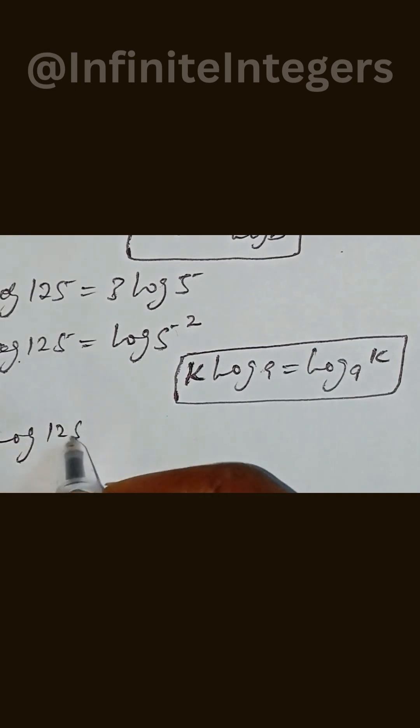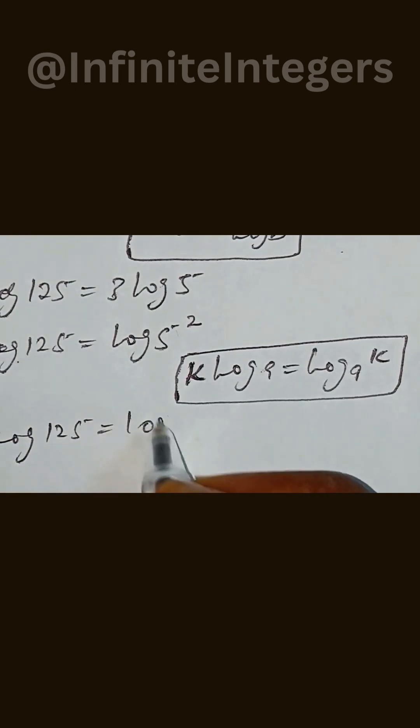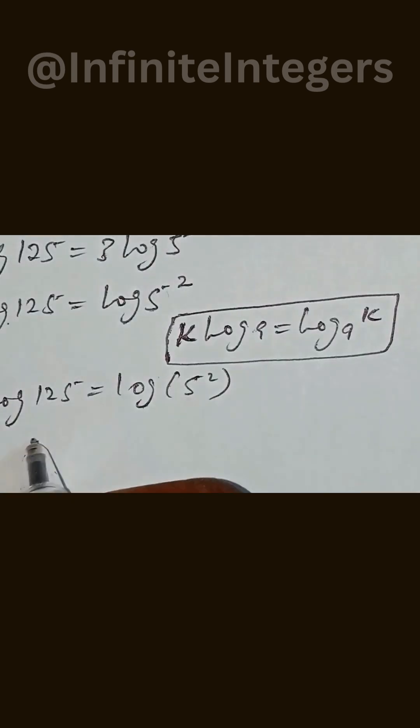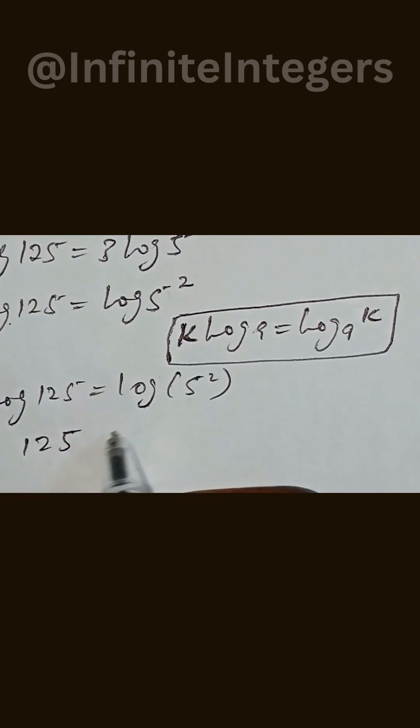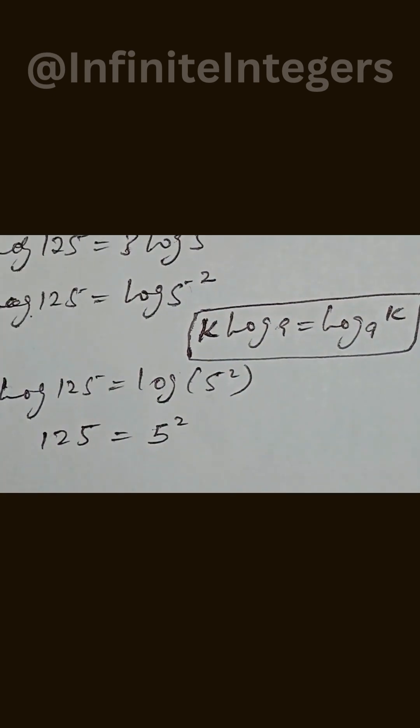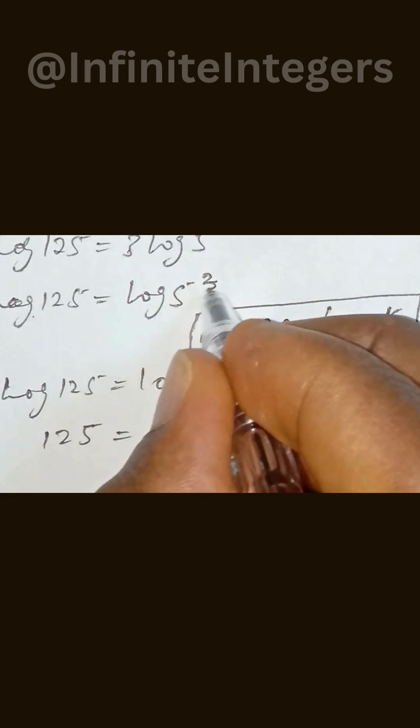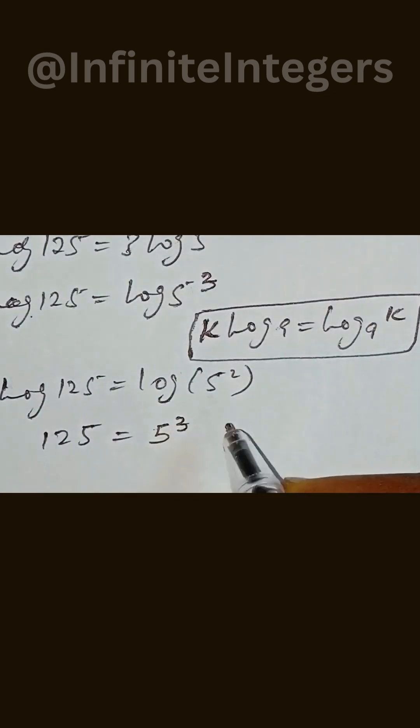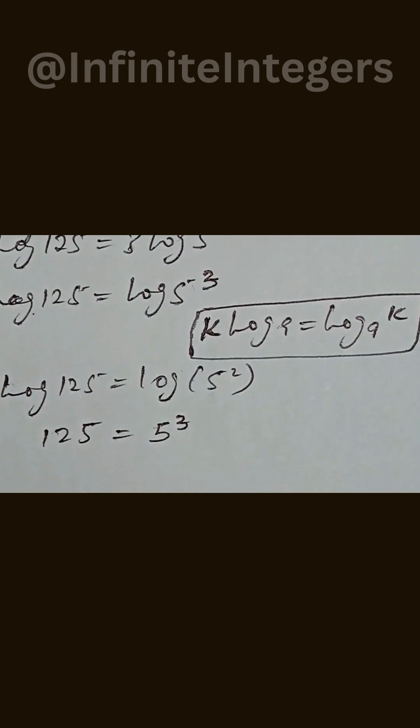Log 125 equal to log of 5 to the power of 3, and this can be written as 125 equal to 5 to the power of 3. So here what happens from here...